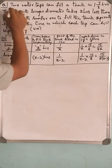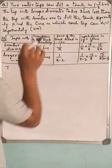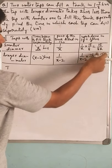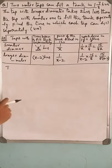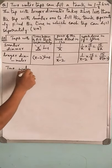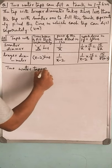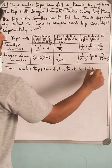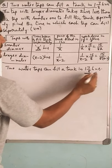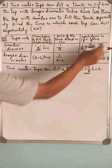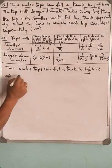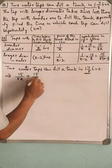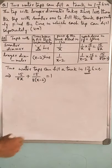Two taps can fill the tank in 1 7/8 hours. The part of the work done by these two taps will equal to the full tank. The work done by the smaller tap is 15/(8x) plus 15/(8(x-2)) equals 1.